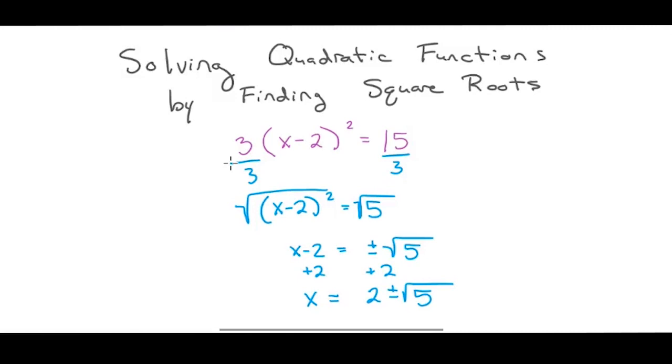So our final answer is x equals 2 plus or minus the square root of 5. This could also be written as 2 plus the square root of 5 or 2 minus the square root of 5. Either way is correct.